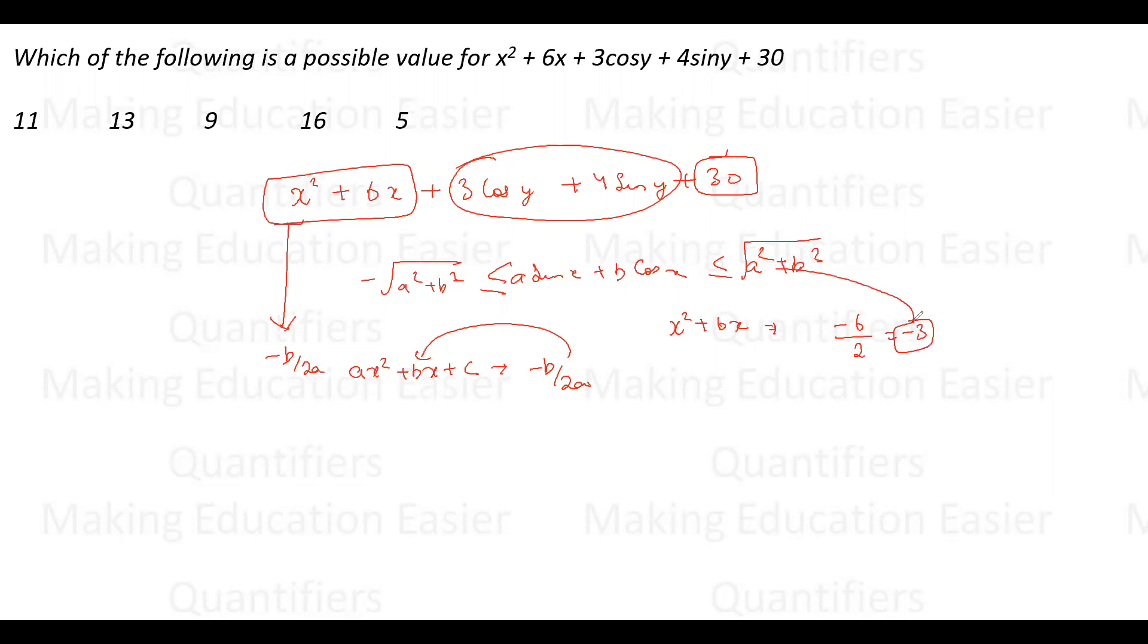If I substitute -3, I get (-3)² + 6×(-3) = 9 - 18 = -9. So the minimum value of x² + 6x is -9. Then we have 3cos(y) + 4sin(y), which lies between -5 and +5. The minimum of this is -5. So -9 + (-5) + 30 = 16.